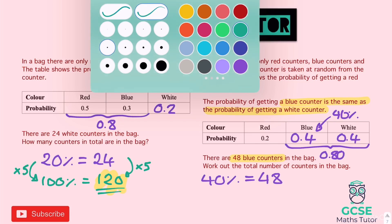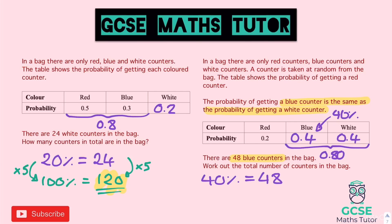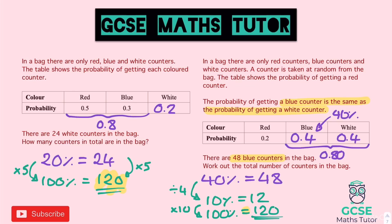We can't directly convert 40% to 100% by simple multiplication, so we divide down to 10%: 48 ÷ 4 = 12, so 10% = 12 counters. Multiply by 10 to get 100%: 100% = 120 counters. Both questions gave 120 counters. In the second question we had two missing probabilities, but the equal-probability clue let us halve the remainder.